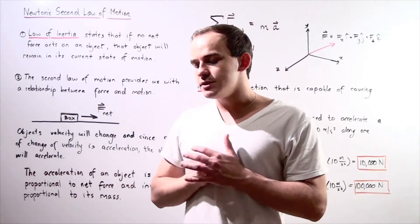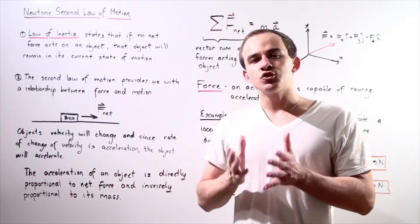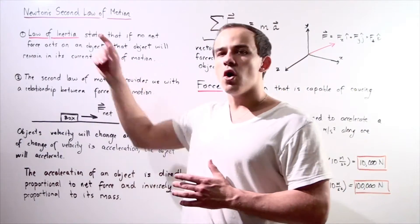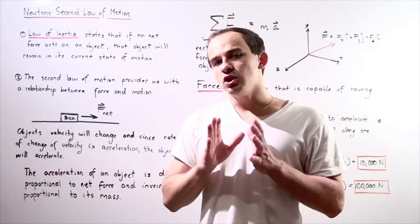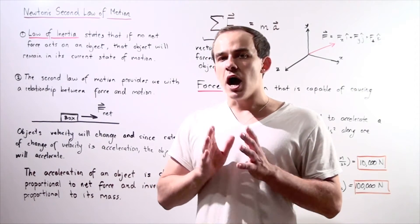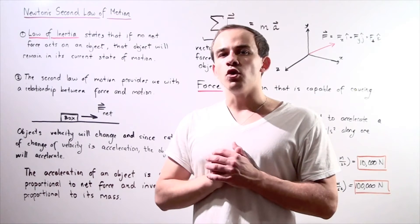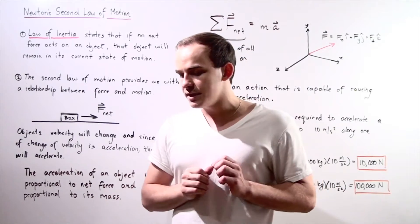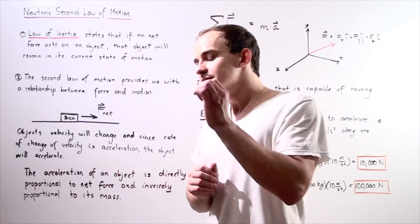Before we talk about Newton's second law of motion, let's recall his first law of motion, also known as the law of inertia. The law of inertia states that if no net force acts on our object, that object will remain in its current state of motion. But what happens if a net force does in fact act on our object?